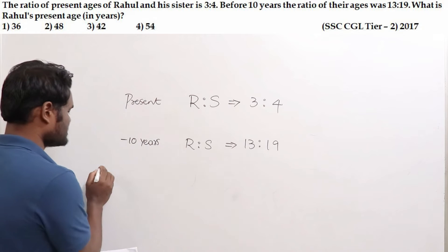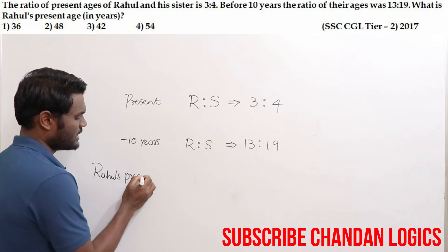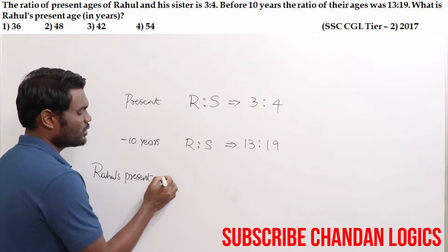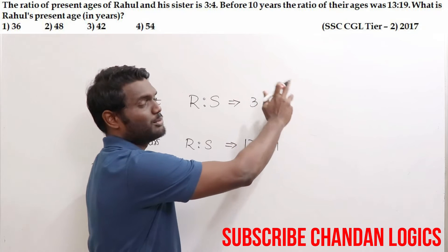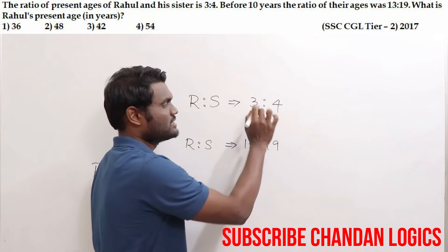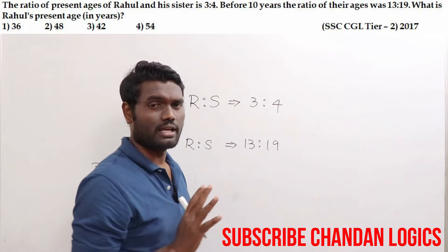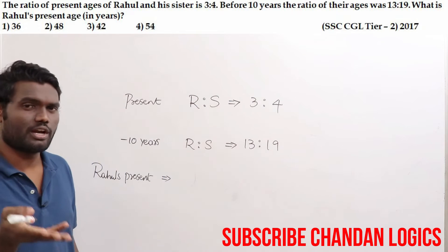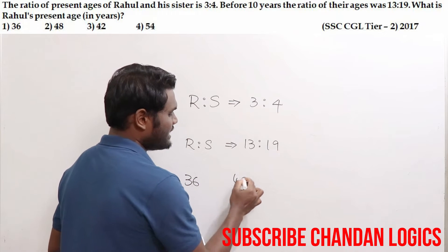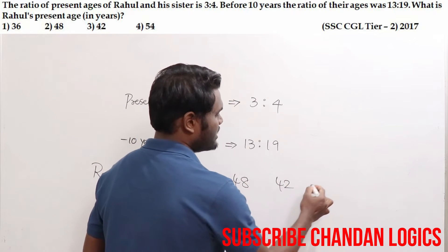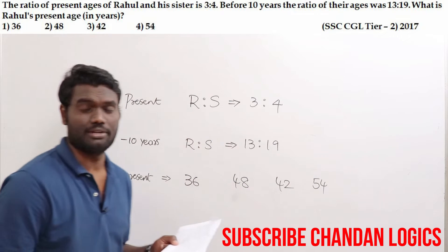We are asked to find what is Rahul's present age. Now if I look at this particular question, the ratios are not the same. Once the ratios are not the same, you know how to solve it — but we are going to solve by just looking at the options. The options are: 36 years, 48 years, 42 years, and 54 years. This was asked in the SSC CGL Tier 2 examination of 2017.